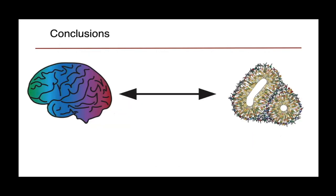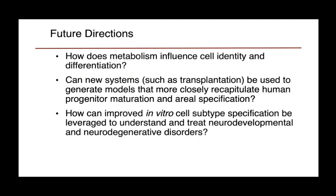When comparing primary tissue to organoids, we see important differences but also major similarities that can be overcome. For future directions, I'm interested in exploring how metabolism influences cell identity and differentiation, and as a regulatory program, how metabolism is involved in many of these developmental processes. Additionally, can new systems — either culture or transplantation — be used to improve the fidelity of our cortical organoids in order to better recapitulate normal developmental processes important for the study of normal development and disease?